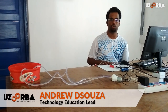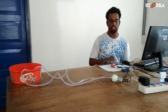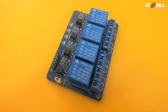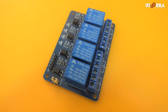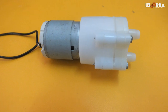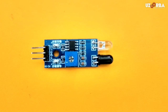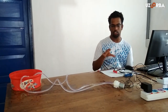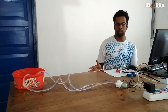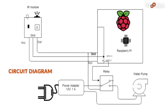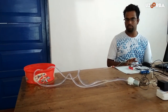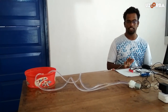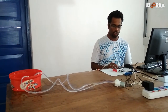This is the dancing fountain project. We use a Raspberry Pi, a relay board, a water pump, and an IR sensor. The IR sensor is used to turn on the entire system when something is present in front of it. If there is nothing present in front of it, the entire project is kept off.